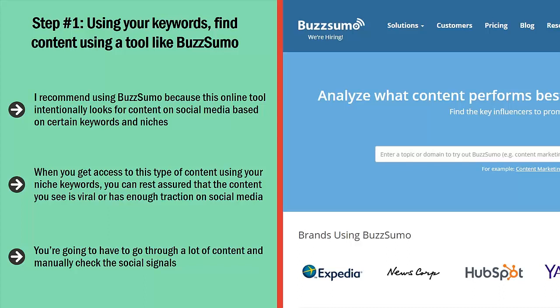I recommend using BuzzSumo because this online tool intentionally looks for content on social media based on certain keywords and niches. It then ranks this material based on their social engagement levels. When you get access to this type of content using your niche keywords, you can rest assured that the content you see is viral or has enough traction on social media.